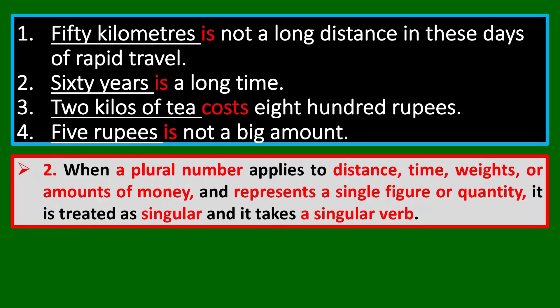Look at these examples: '50 kilometers is not a long distance in these days of rapid travel.' '60 years is a long time.' '2 kilos of tea costs 800 rupees.' '5 rupees is not a big amount.' You see the 'S' on kilometers, years, kilos, rupees — they look plural — but the verbs are singular: 'is,' 'is,' 'costs,' 'is.' When we talk about distance, time, weight, or amounts of money, they represent a single unit or figure.